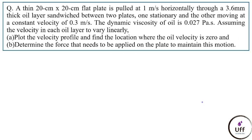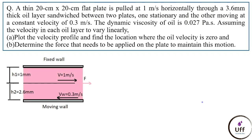The question: a thin 20 cm by 20 cm flat plate is pulled at 1 meter per second horizontally through a 3.6 mm thick oil layer sandwiched between two plates — one stationary and one moving at a constant velocity of 0.3 meter per second. The dynamic viscosity of oil is 0.027 pascal seconds. Assuming velocity in each oil layer varies linearly, plot the velocity profile, find where oil velocity is zero, and determine the force needed to maintain this motion.